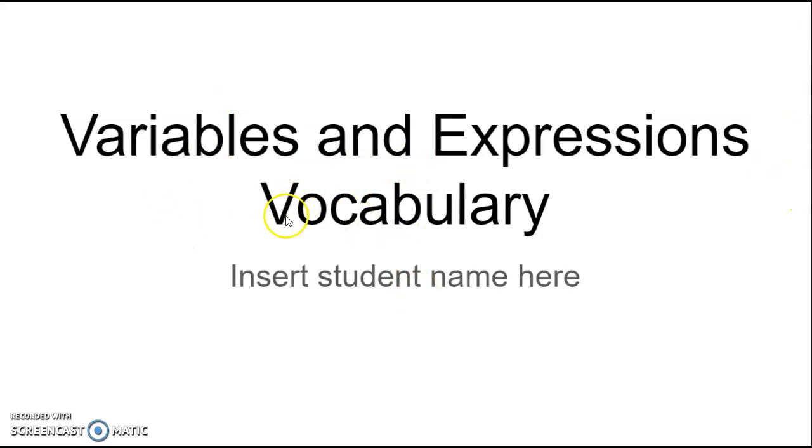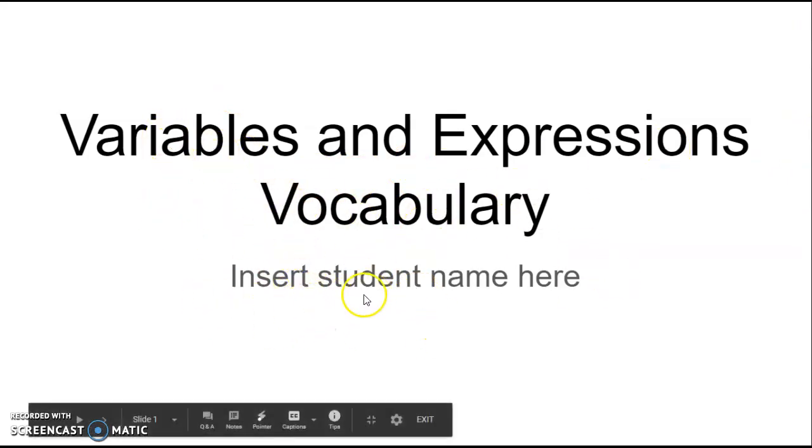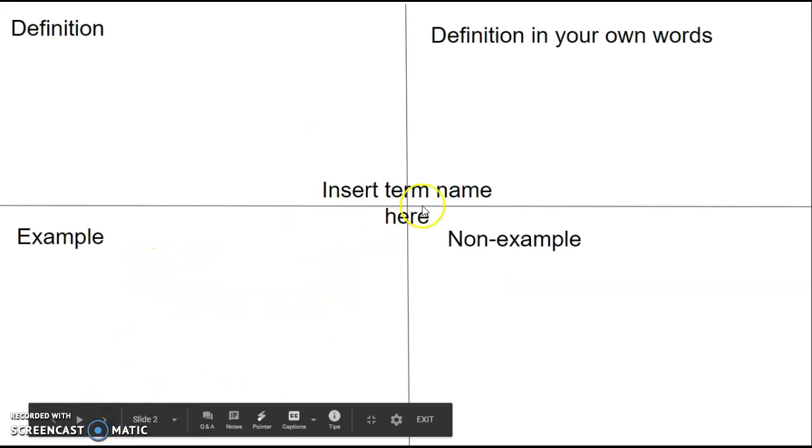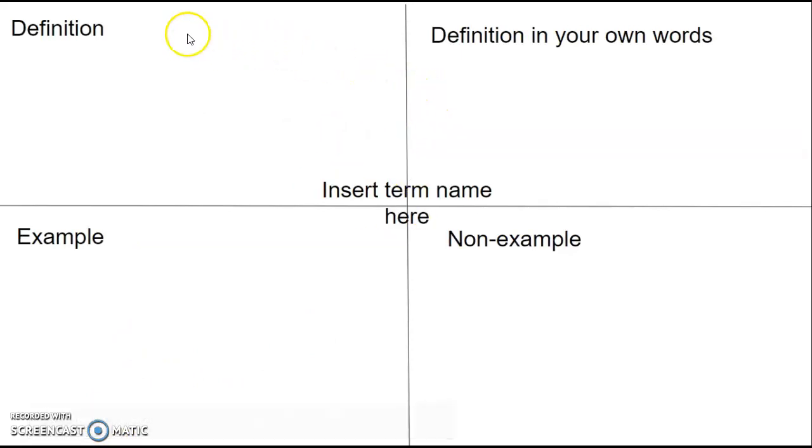So what you'll do is you'll open this up and I already have the title page for you and you just insert your name here. You can change the background if you wish, you don't have to. And then what you're going to do is you're going to write the definition in the left hand corner. So the definition that I gave you in the PowerPoint, that's what you're going to write in the left hand corner. The term name goes in the middle, so you'll just click on the text box and insert the name.